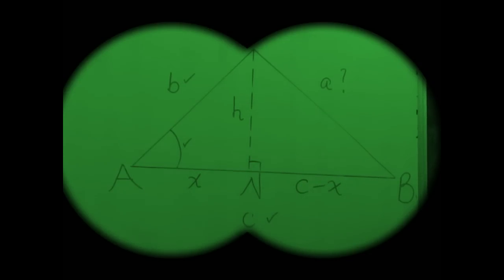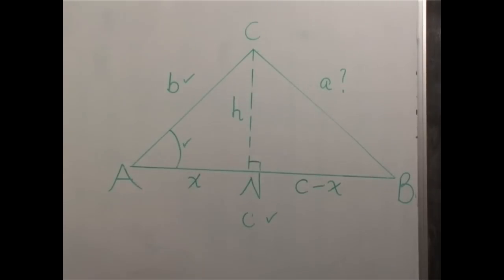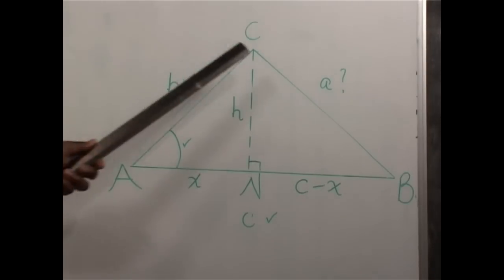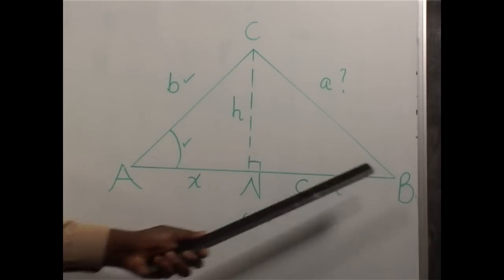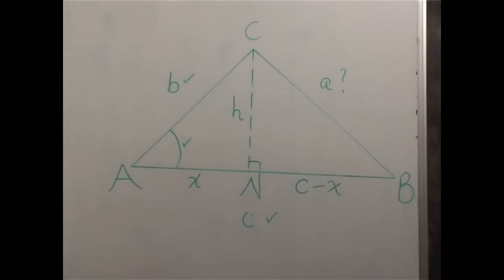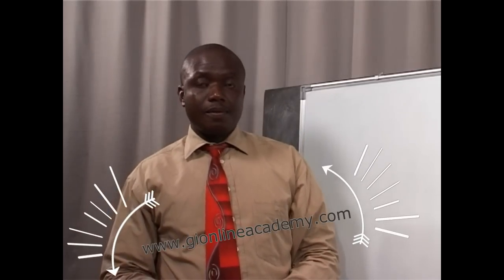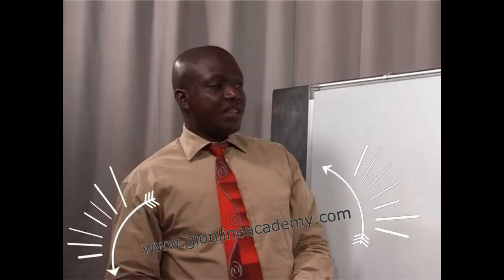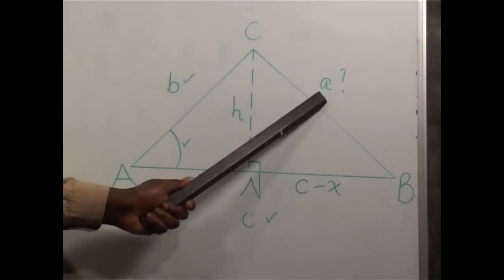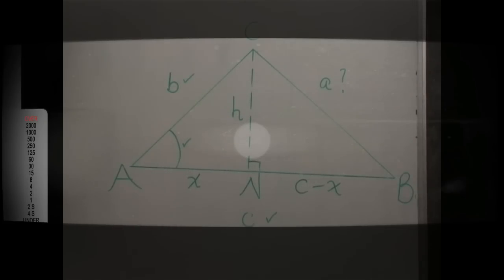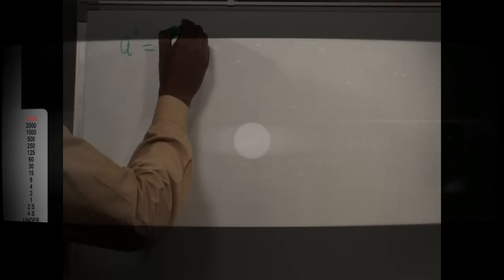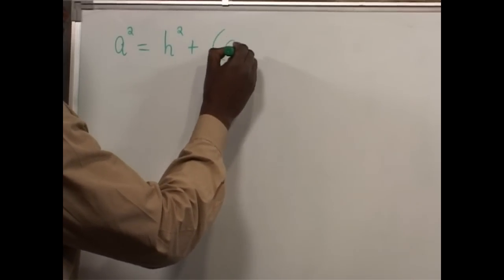Having done that, we are now going to look at what we want to find, which is side A. This side A is in triangle CBN, in which we have introduced H and NB is C minus X. Given the three sides of a right-angled triangle, we are going to use the Pythagoras theorem, in which the square of the hypotenuse is equal to the sum of the squares of the other two sides. So our first relationship will be: A squared is equal to H squared plus (C minus X) squared.